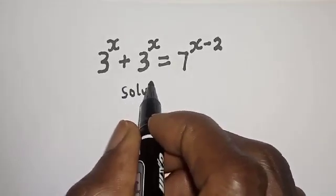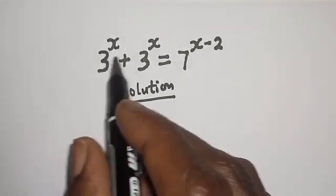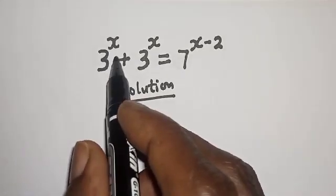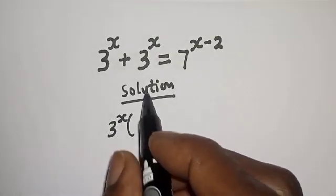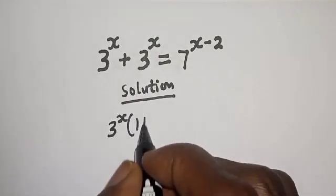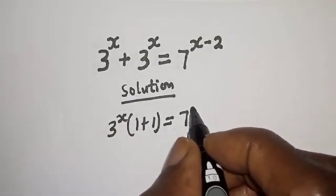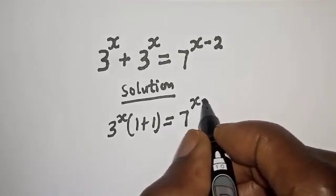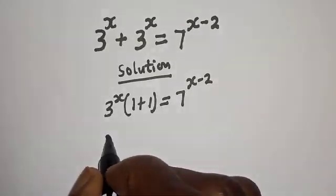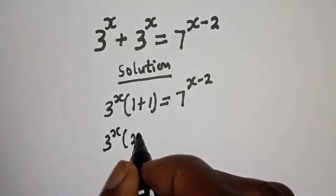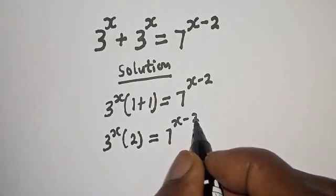Solution. If you look at the left hand side there, 3 raised to power s is common. Let's bring it out. We have 3 raised to power s bracket 1 plus 1 is equal to 7 raised to power s minus 2. Then, 3 raised to power s times 2 is equal to 7 raised to power s minus 2.